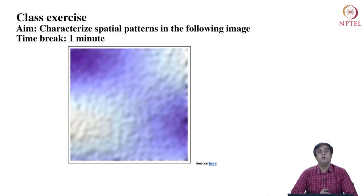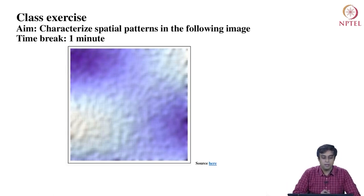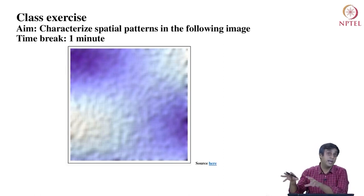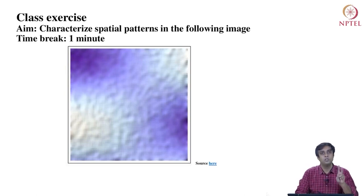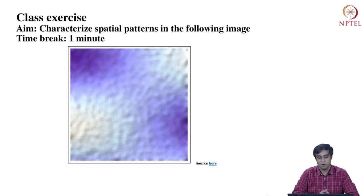Using these two concepts, as a class exercise, we will give you one minute to look at the image on your screen and characterize the spatial patterns in it — specifically through the lens of spatial heterogeneity: do you see any trends? And spatial dependence? We have two instruments: spatial dependence and spatial heterogeneity. Look at the picture and figure out how you would characterize the image in front of your screen.